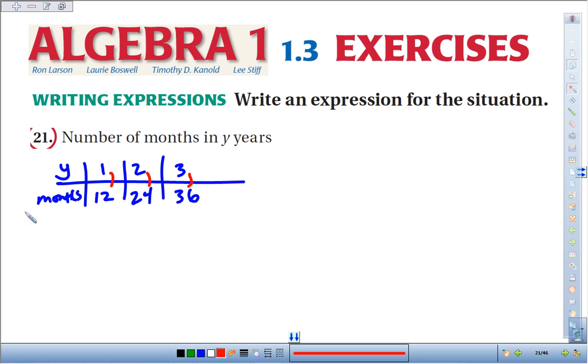So, an expression for the number of months in y years, it would be 12 months in a year times the number of years, and that would give us our expression for how many months we have, 12y.